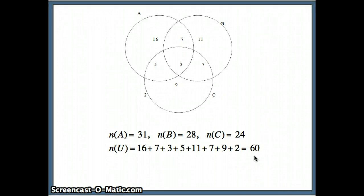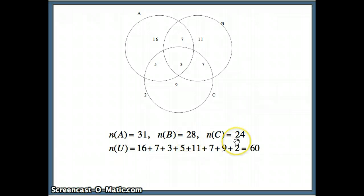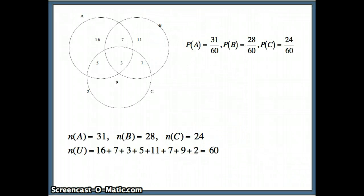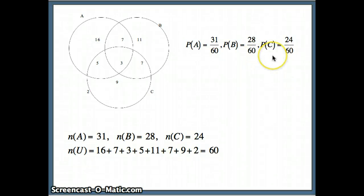We're going to use these numbers to answer the following questions. If you select something at random, what is the probability it's in A? We have 31 elements in A out of a total of 60 in the universal set. Similarly, the probability of selecting something from B is 28 out of 60 total, and the probability of selecting something from C is 24 out of 60 total.